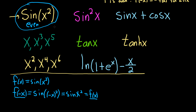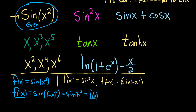Now look at f of x equals sine squared x. If we plug in minus x, we get sine of negative x, quantity squared — that's what sine squared shorthand notation means. Sine is an odd function, so the negative just comes out. Because we're then squaring the negative, we just get sine squared x, which is f of x. So this one is also even.